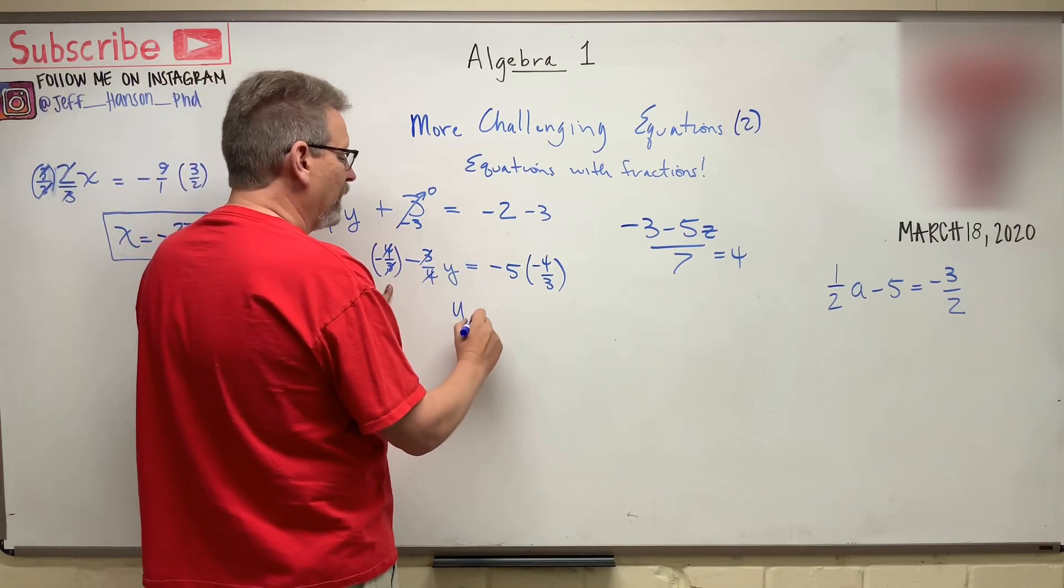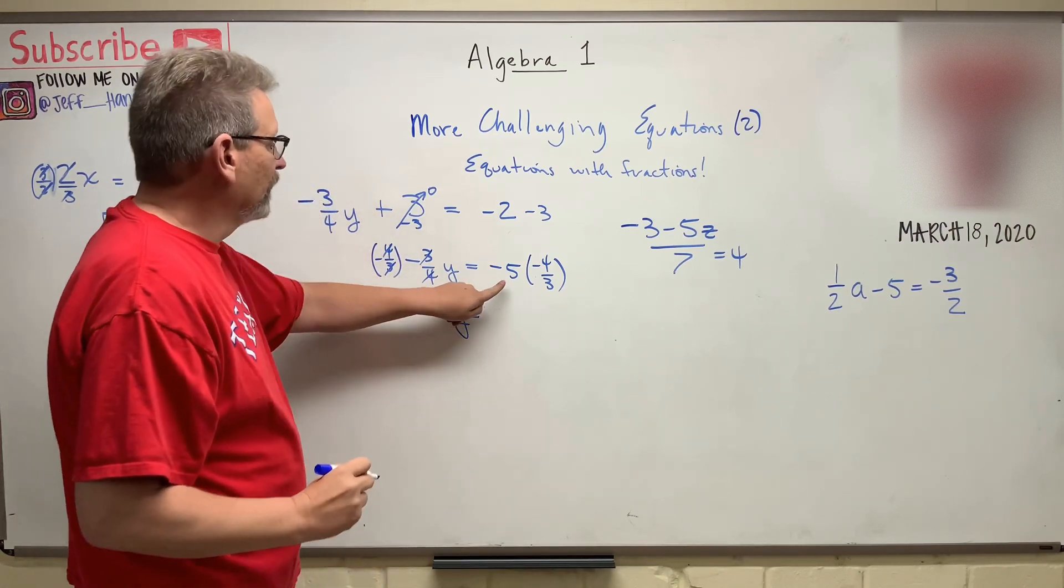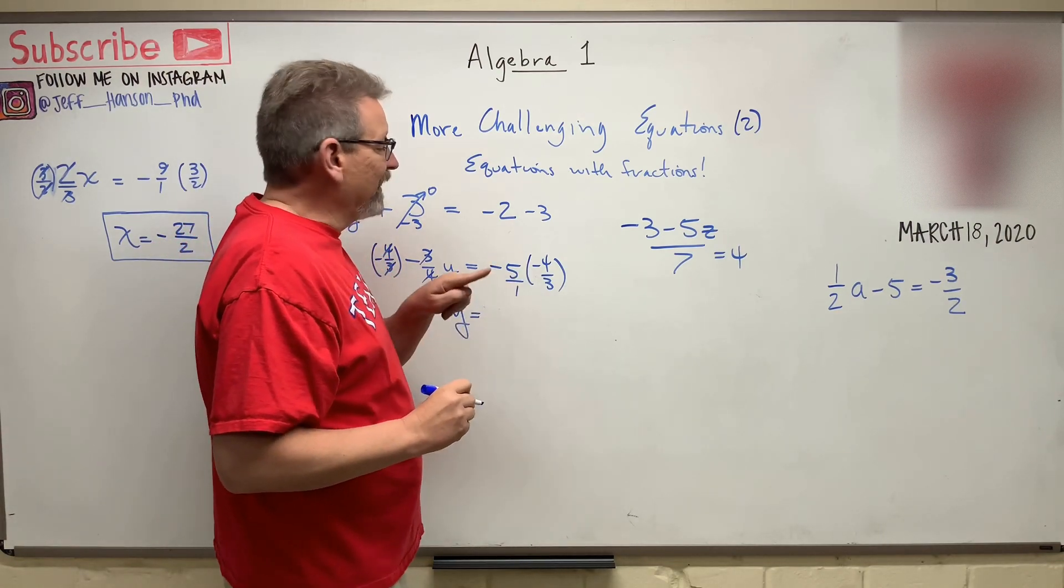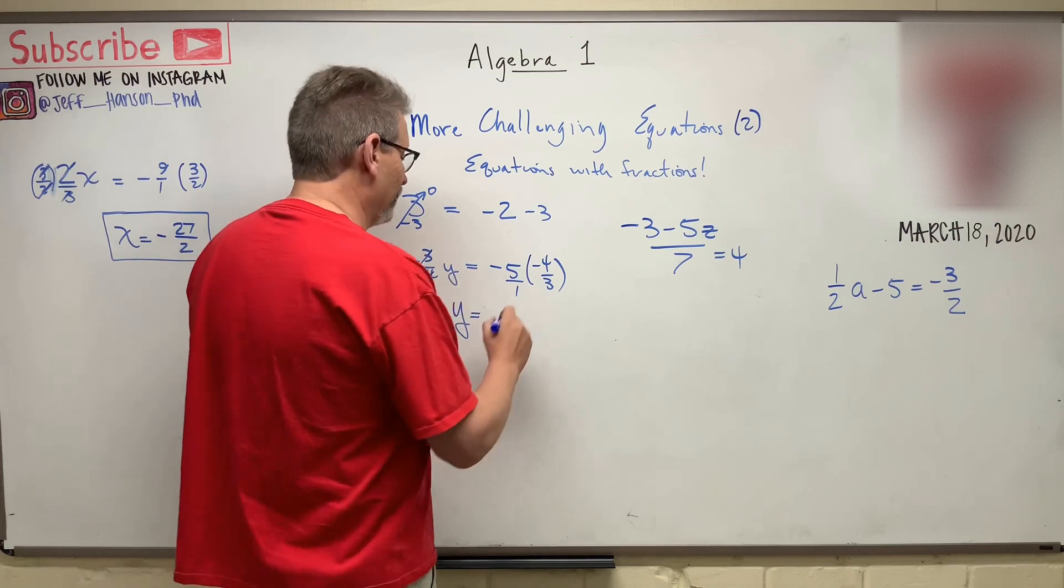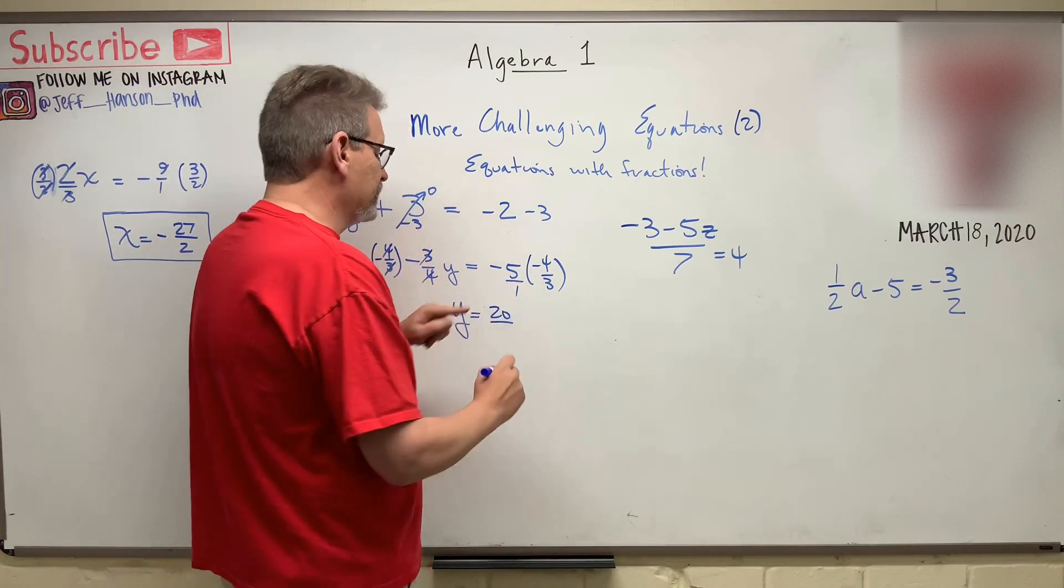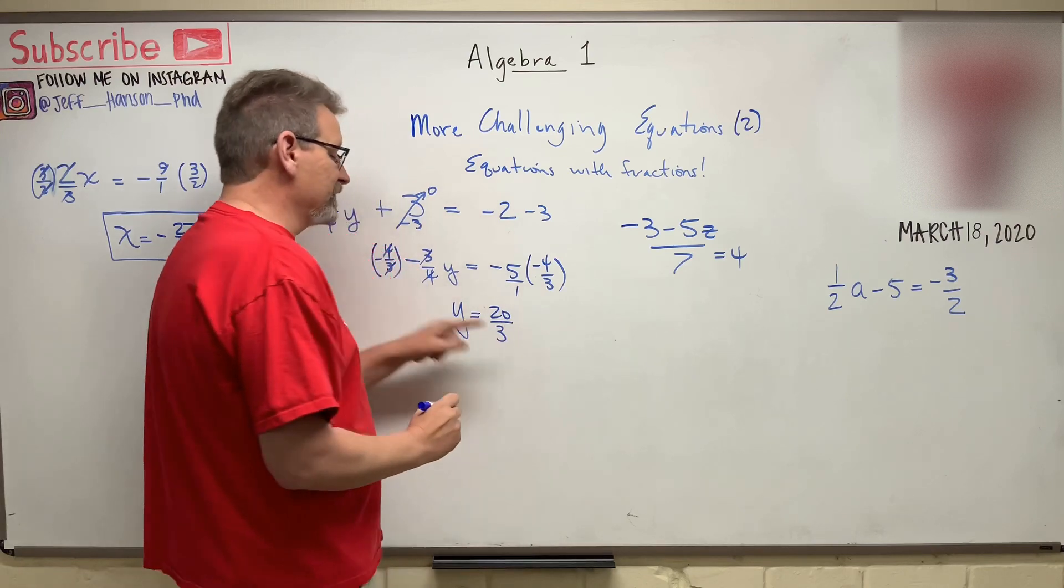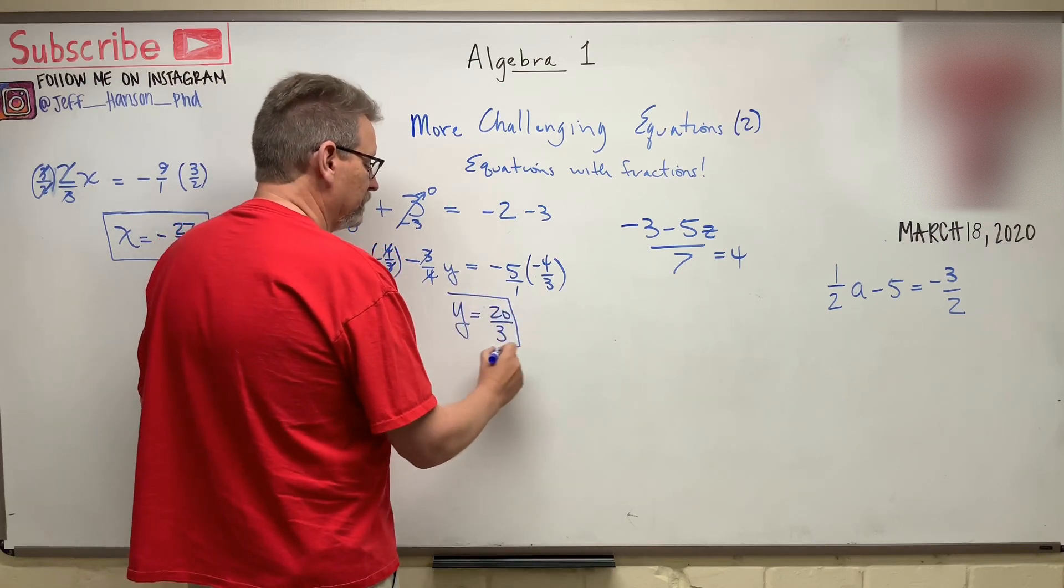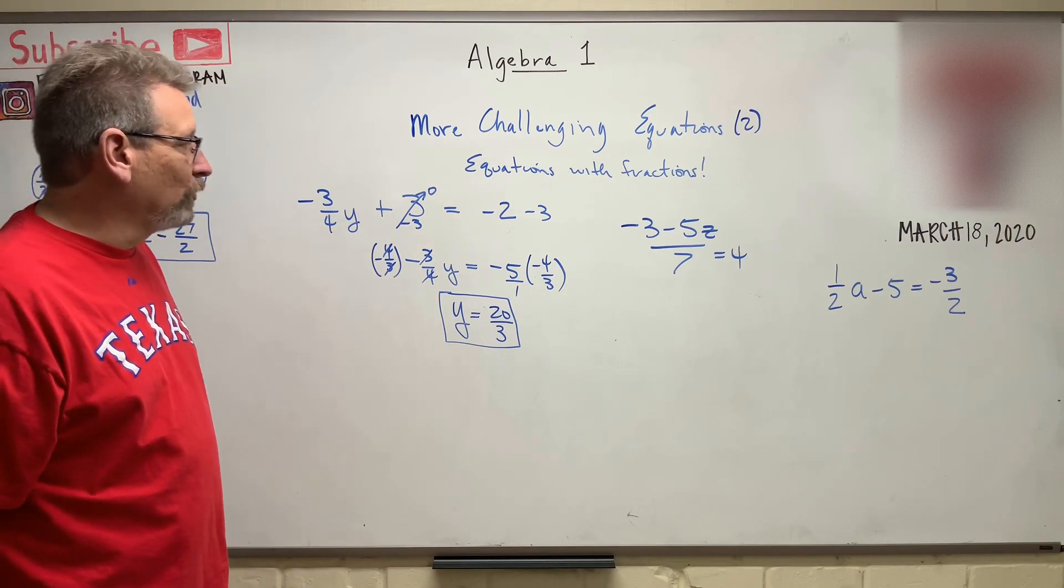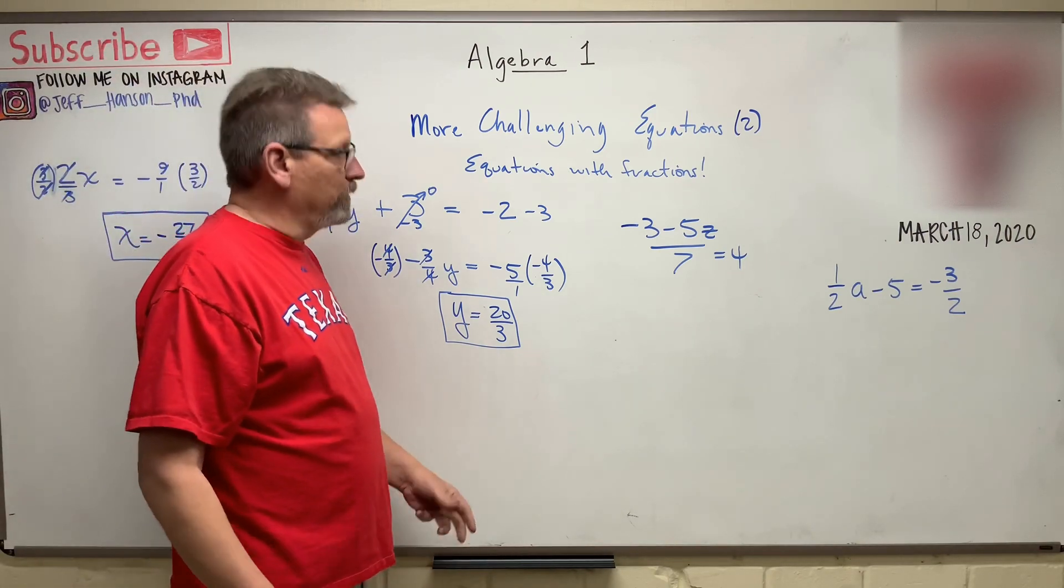So the threes go away, the fours go away. This side leaves me with y only. And on this side, remember, this is five over one. So negative times a negative is a positive. So five times four is 20. And on the bottom, I have one times three, which is three. And that doesn't reduce any more, does it? And that would be my answer. Y equals 20 divided by three, or 20 over three, or twenty-thirds.